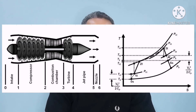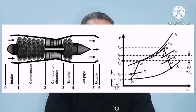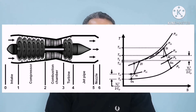State 0 to 1 is labeled as the intake, while state 1 to 2 is a process at the compressor. State 2 to 3 is a process that occurs at the combustion chamber. State 3 to 4 is a process at the turbine. Process 4 to 5 is at the jet pipe, and 5 to 6 is a process at the nozzle.